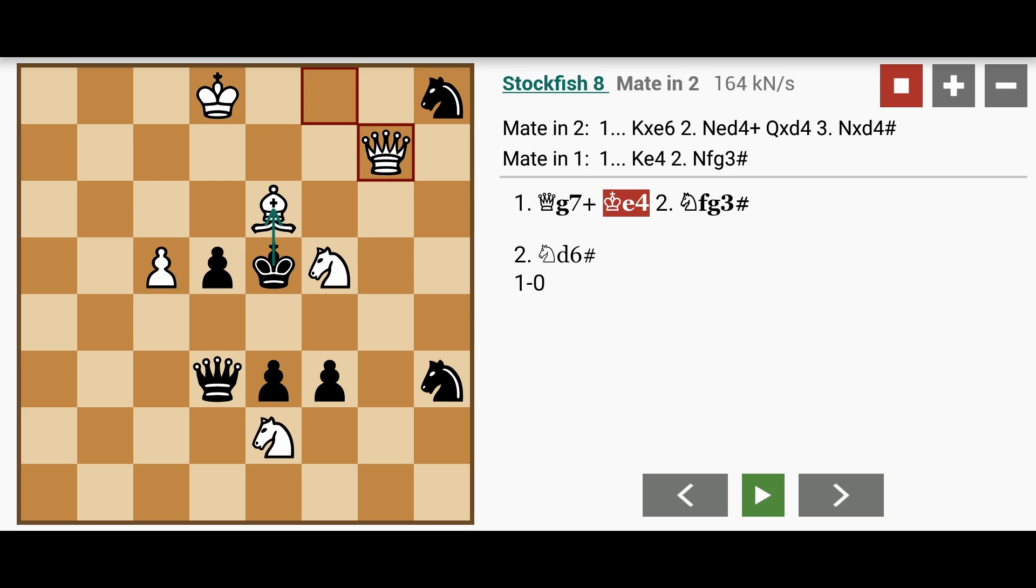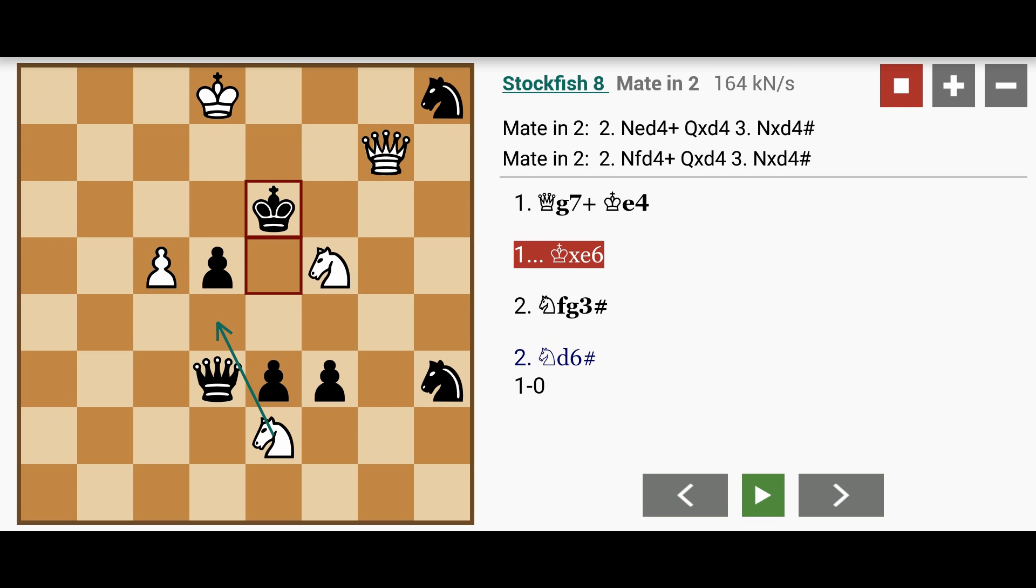So instead, black captures the bishop. So white sacrifices the bishop. And here there are two moves.